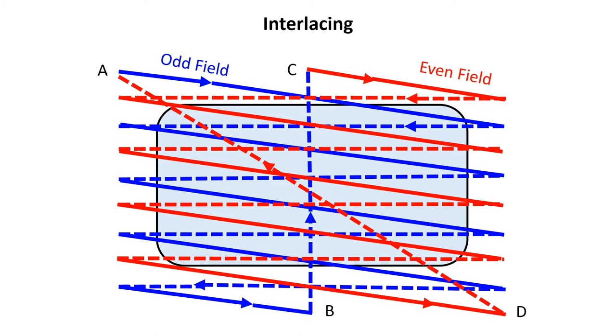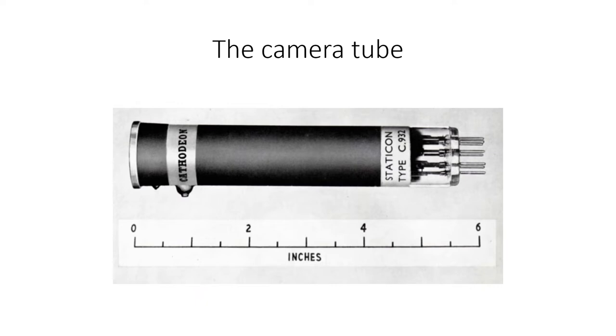In the British black and white TV system from 1936 to the 1960s, there were 405 lines per frame, 202 and a half per field. In the 1960s, 625 lines per frame was introduced, which gave a better quality picture. This is a picture of a camera tube that is used to convert the image into an electrical signal. It includes the image sensor. This tube was made by Cathodeon, a Pi company, and was called a Staticon by Pi, but is more generally known as a Vidicon. It was 6 inches long by 1 inch in diameter.